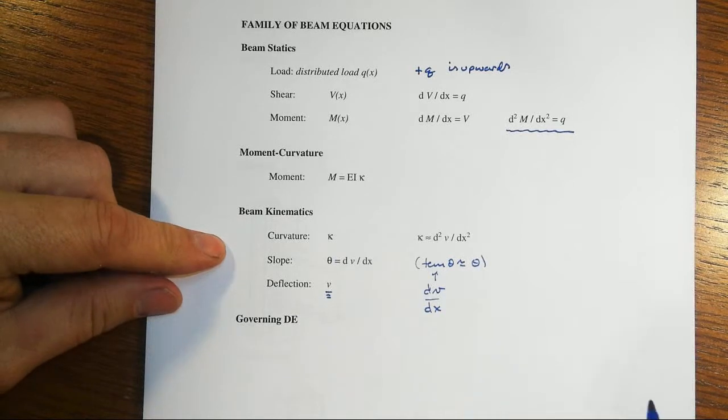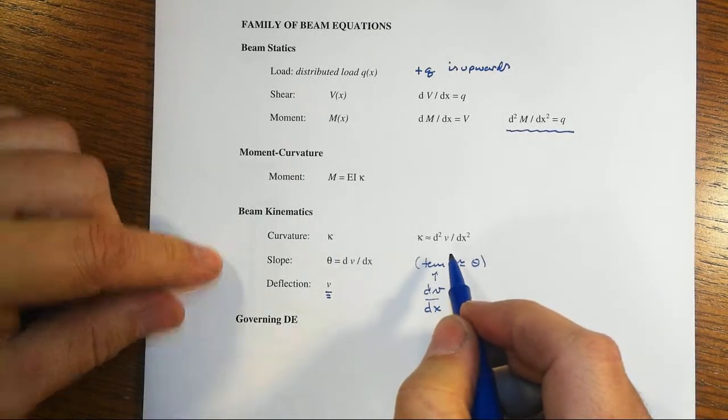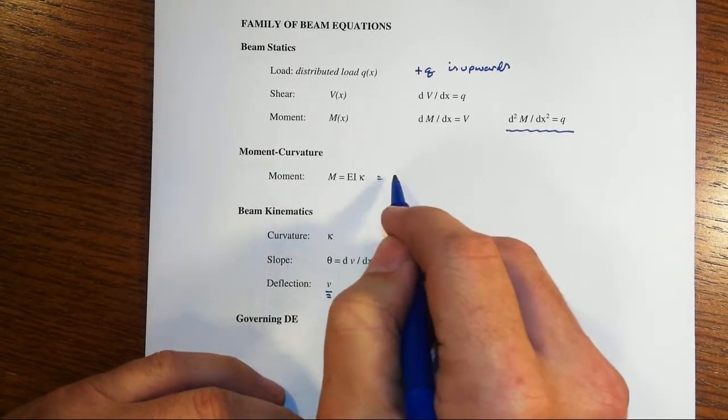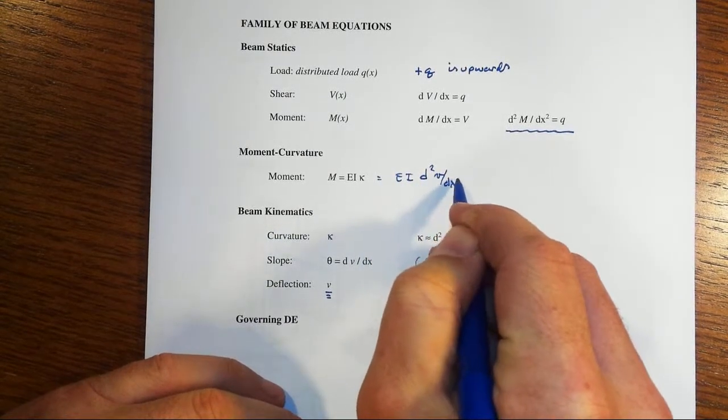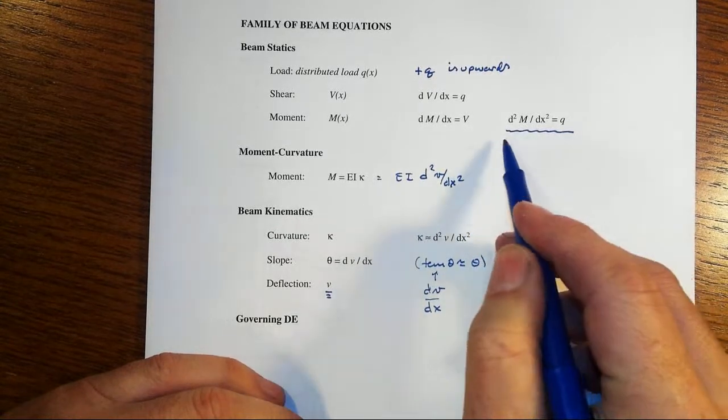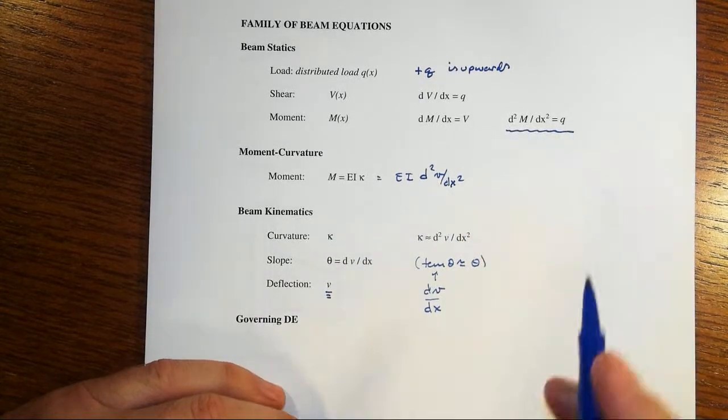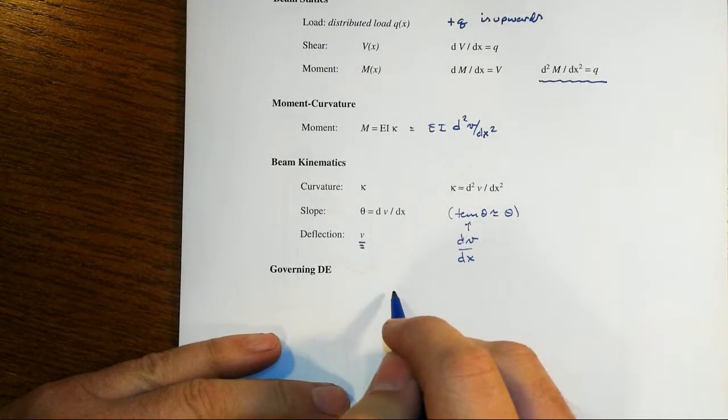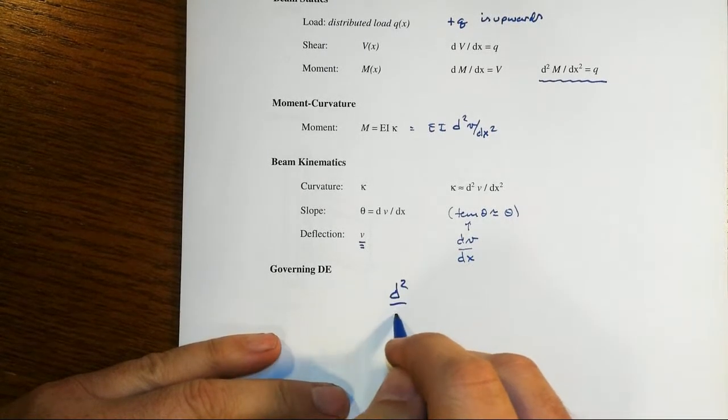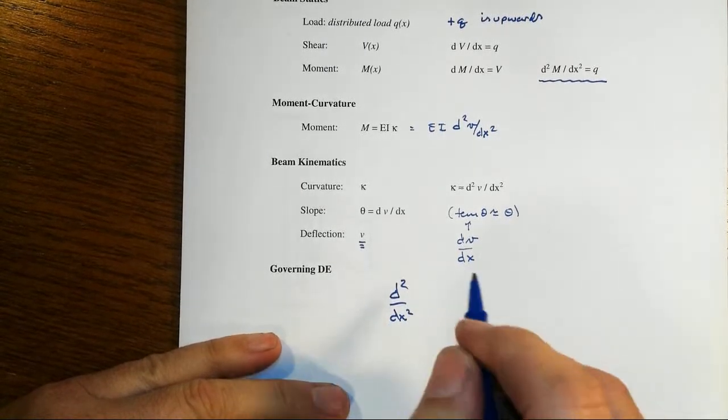So when we pull all of that together, then note that the moment is equal to EI times the second derivative of little v. But since the second derivative of the moment is equal to the load, we can marry all this together into one governing differential equation, which is as follows.